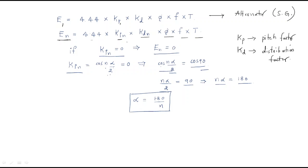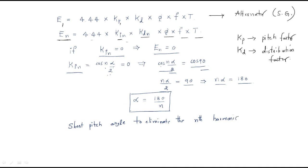Therefore α = 180°/n. This is called the short pitch angle required to eliminate the nth harmonic. For example, to remove the 5th harmonic, the short pitch angle α = 180°/5 = 36 degrees.